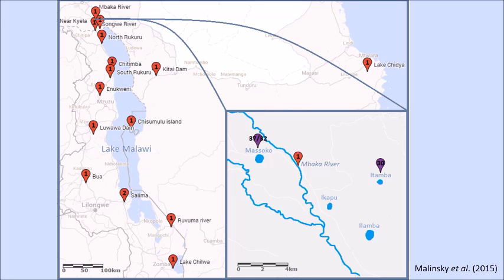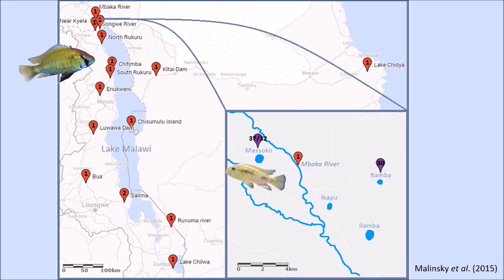The zoomed in map shows the Rungwe district, and this is where Lake Mazoko is found. Lake Mazoko is the crater lake where the two ecomorphs are found. It's about 700 meters in diameter, so it's a very small lake, and it's found very close to the Embarka River, which connects it to the wider Lake Malawi catchment area. The red pins show the presence of Astatilapia calyptra, whereas the purple pins show haplochromine cichlids endemic to the particular crater lakes. From Lake Mazoko, 37 shows the number of littoral morphs and 32 shows the number of benthic morphs that had their genome sequenced in the paper by Malinsky et al.